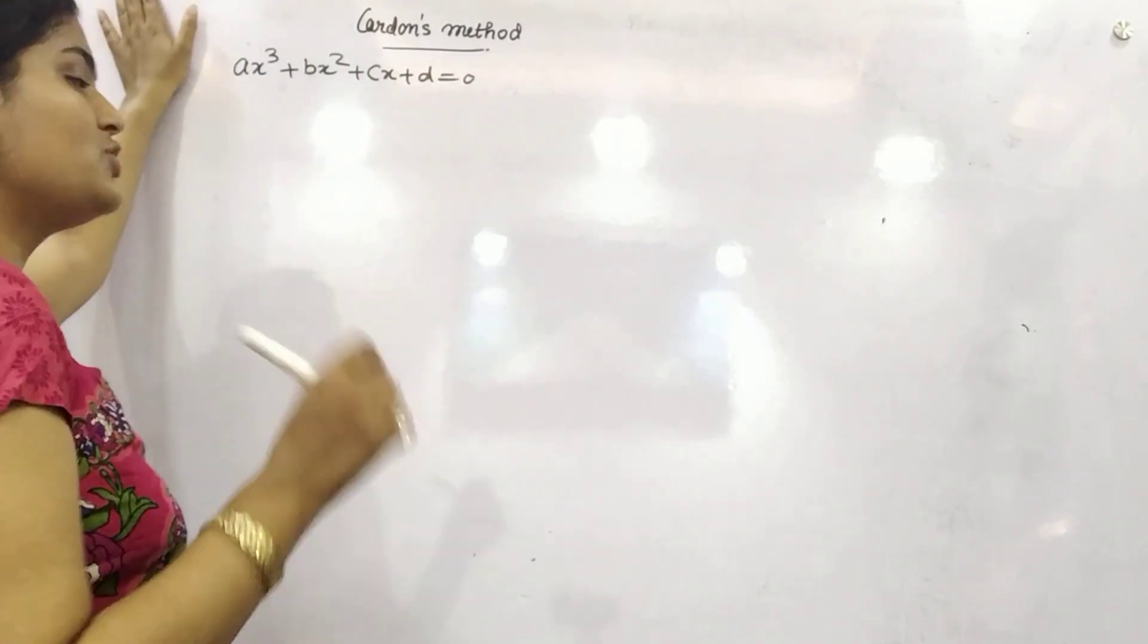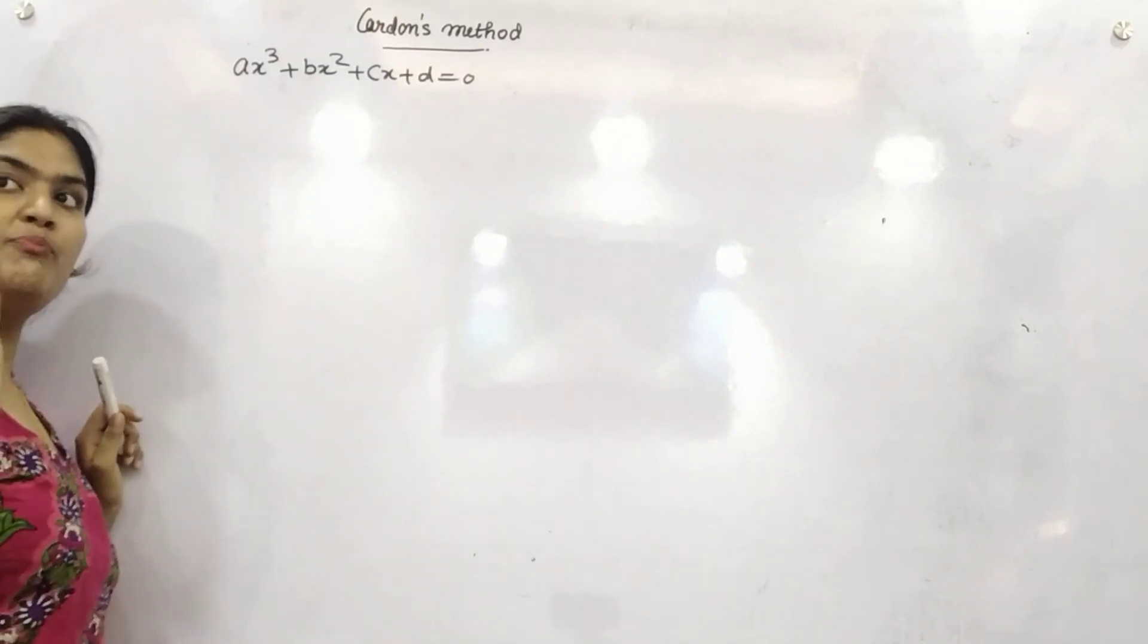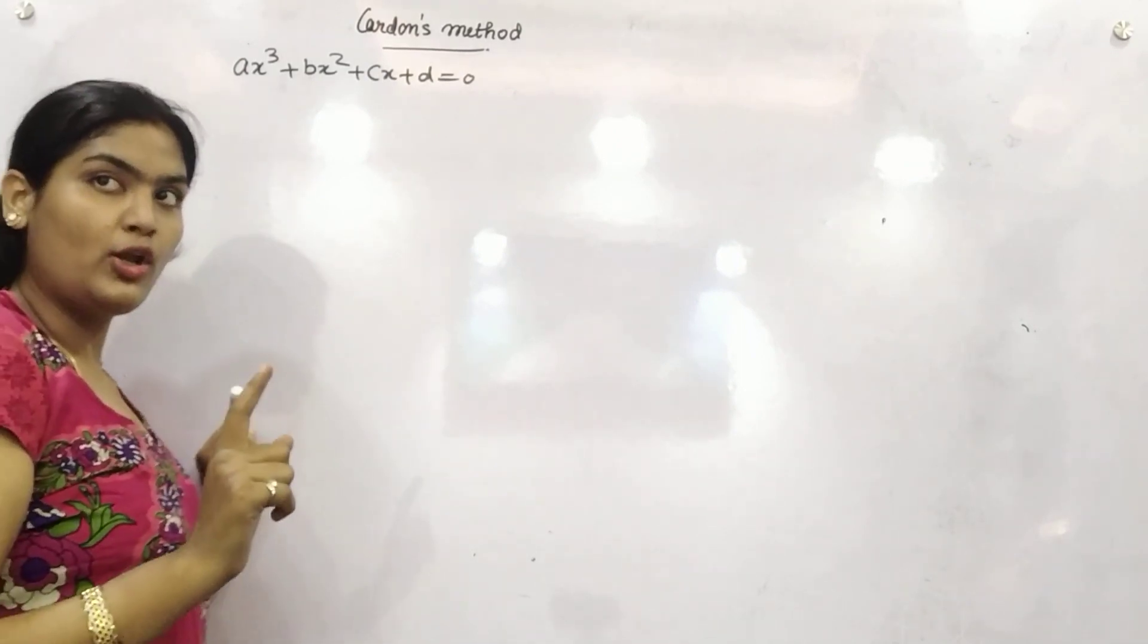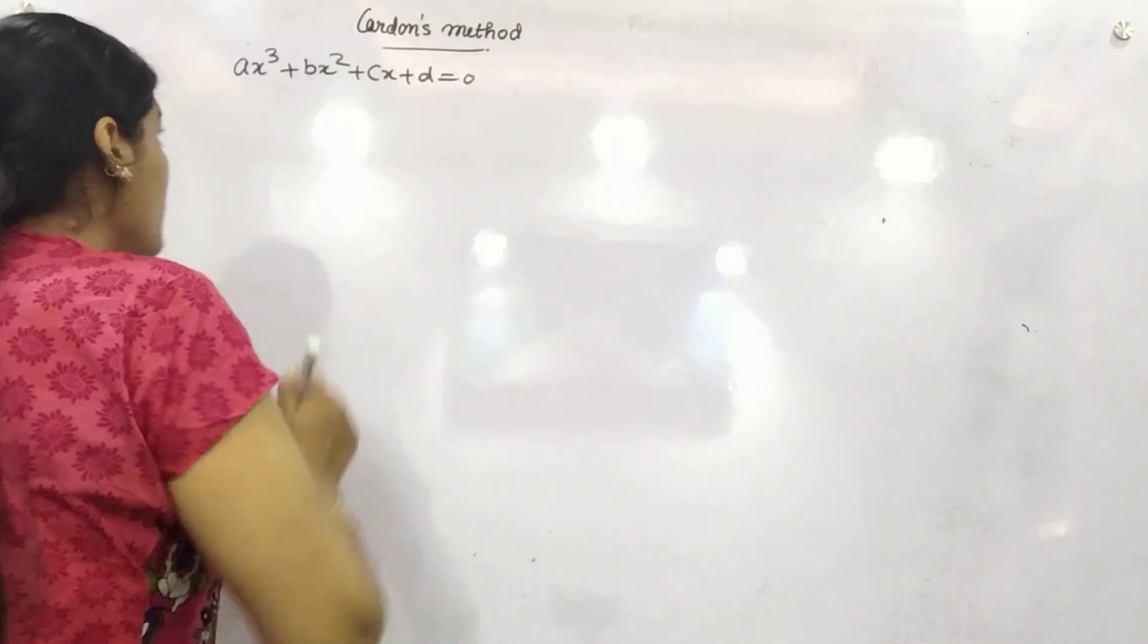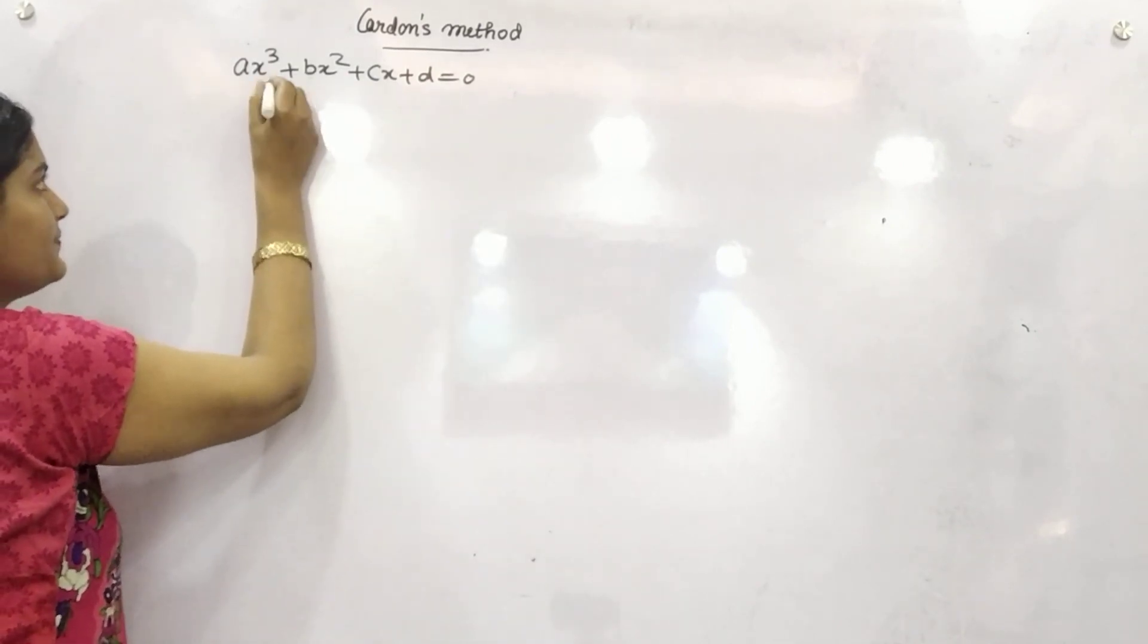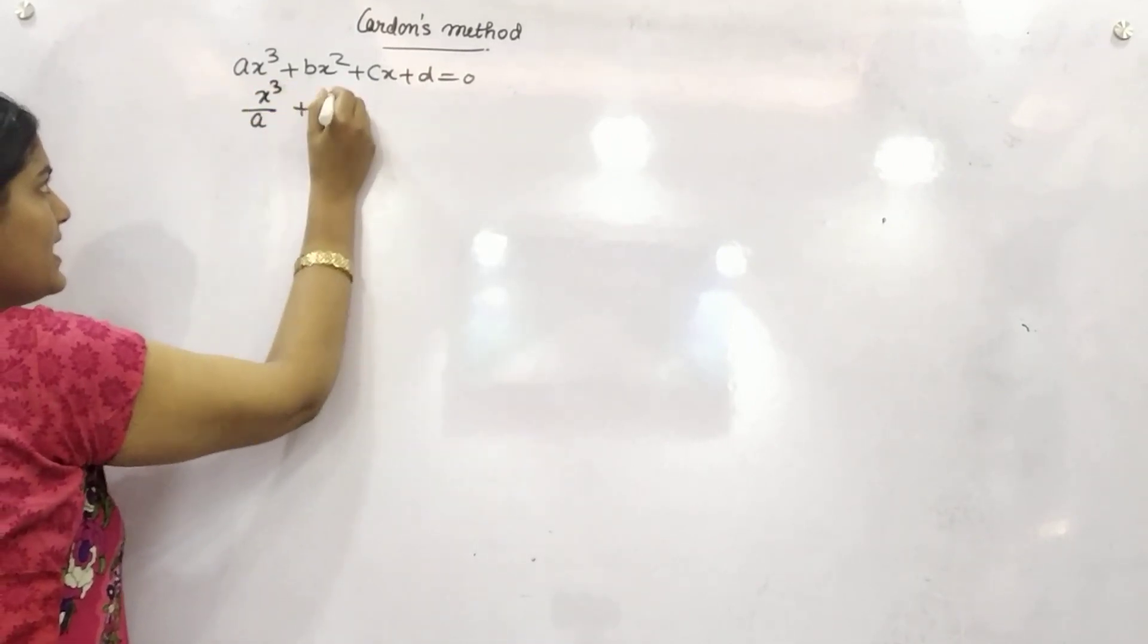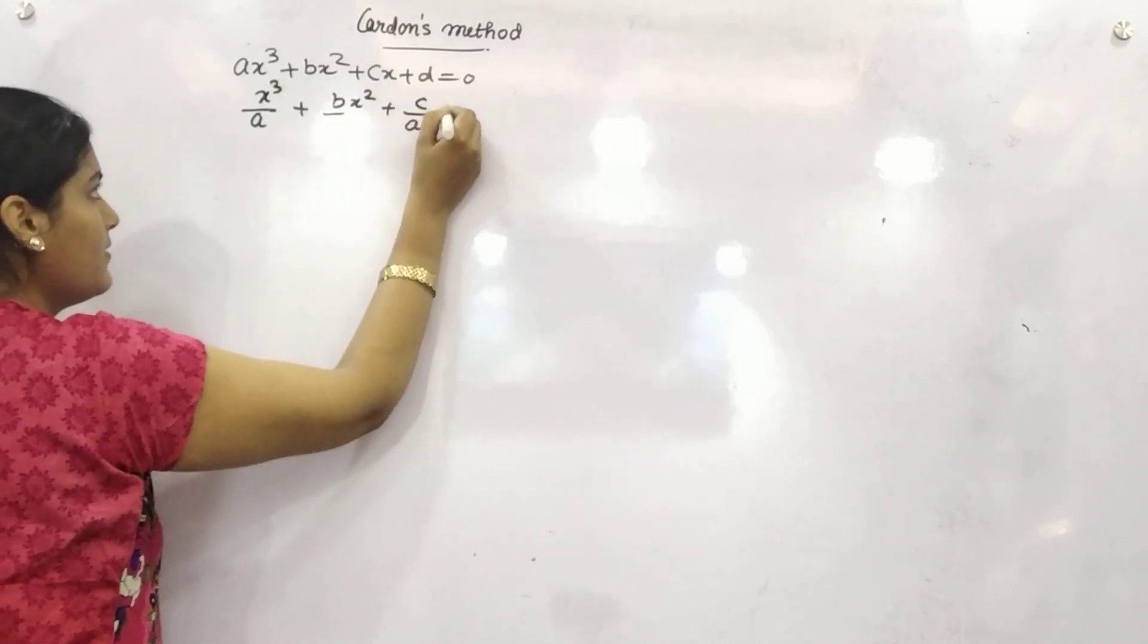You are given with a general cubic equation. So the first step is make sure the coefficient of highest power, that means coefficient of x cubed should be 1. So to make it 1, you need to divide it with a: x cubed by a, bx squared by a, c by a, d by a.